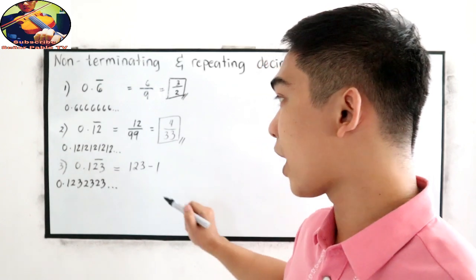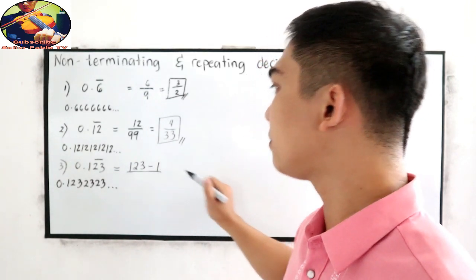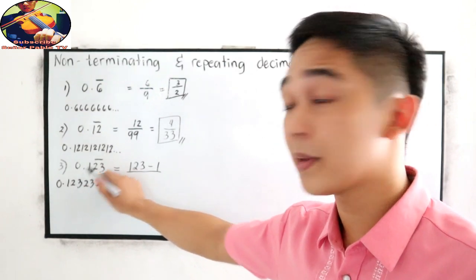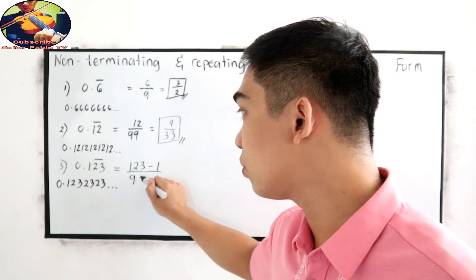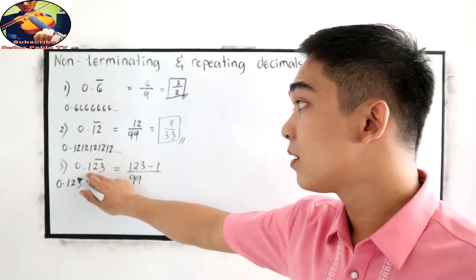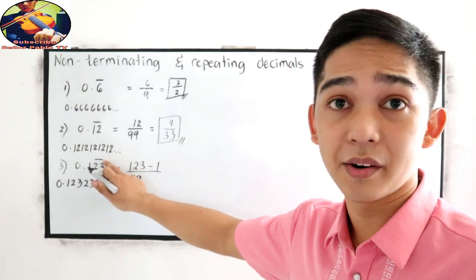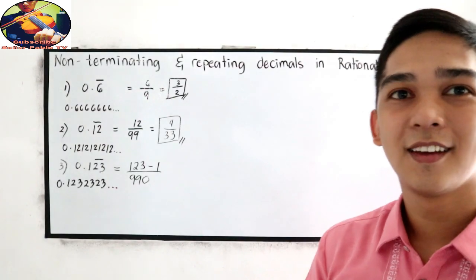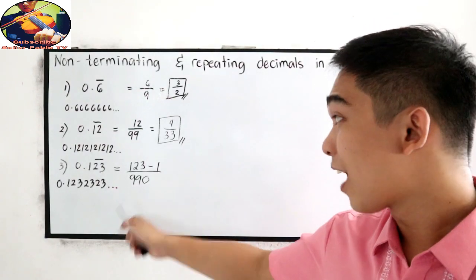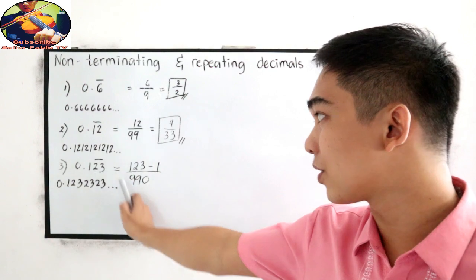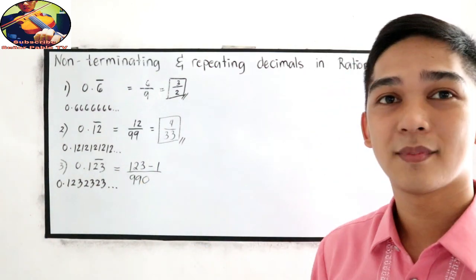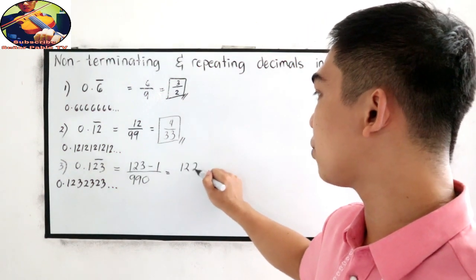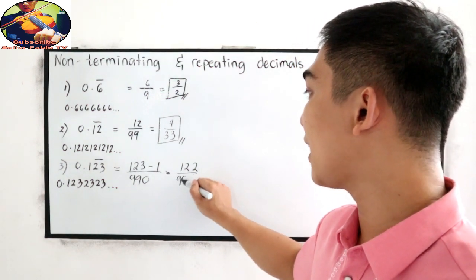So copy 123, subtract 1, giving us 122 as the numerator. For the denominator: we have 2 digits under the bar, so we write 99, then since 1 is not included in our bar, we replace that with 0, making the denominator 990. So we have 122 over 990.